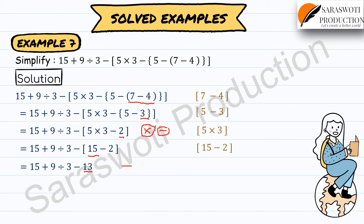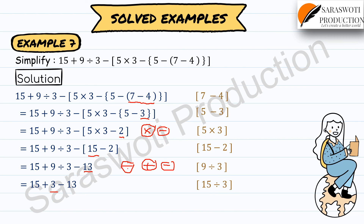Now apply BODMAS to the remaining expression: first division — 9 ÷ 3 equals 3, giving 15 plus 3 minus 13. Then addition: 15 plus 3 equals 18, giving 18 minus 13. Finally, 18 minus 13 equals 5. That is the answer!